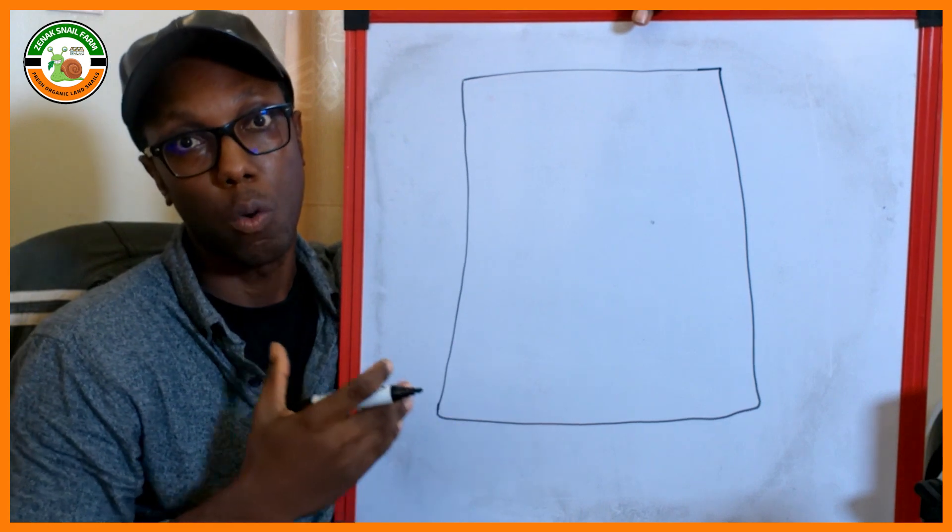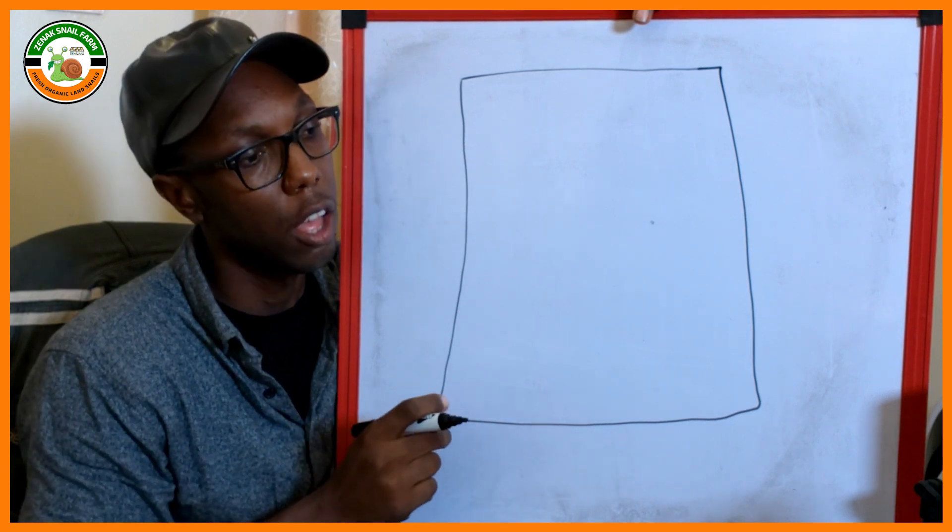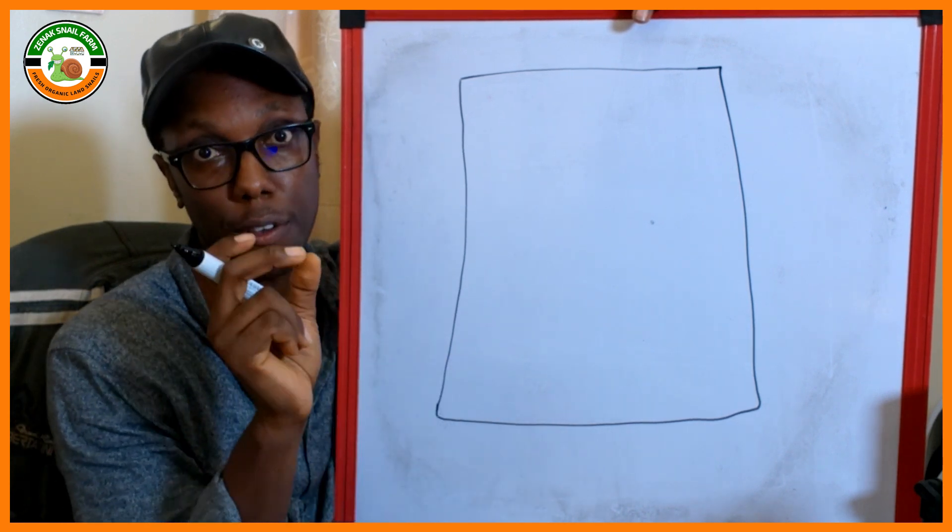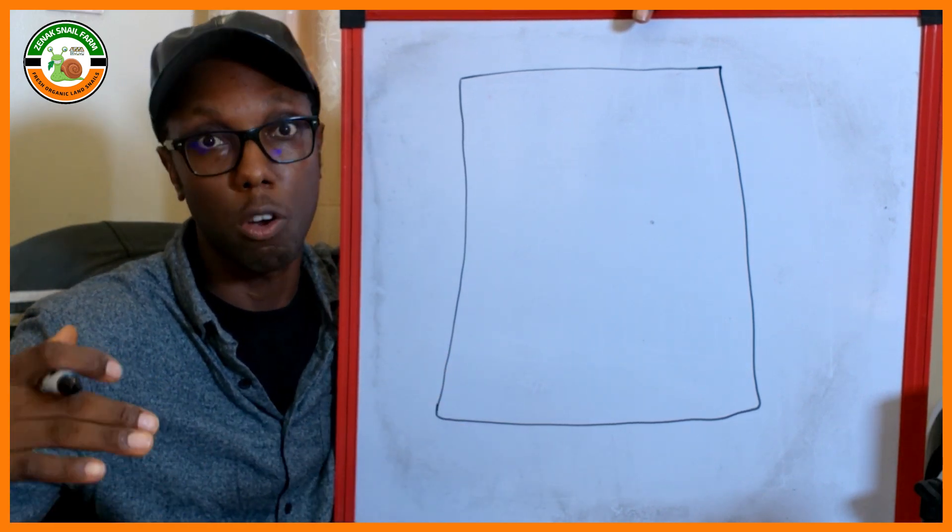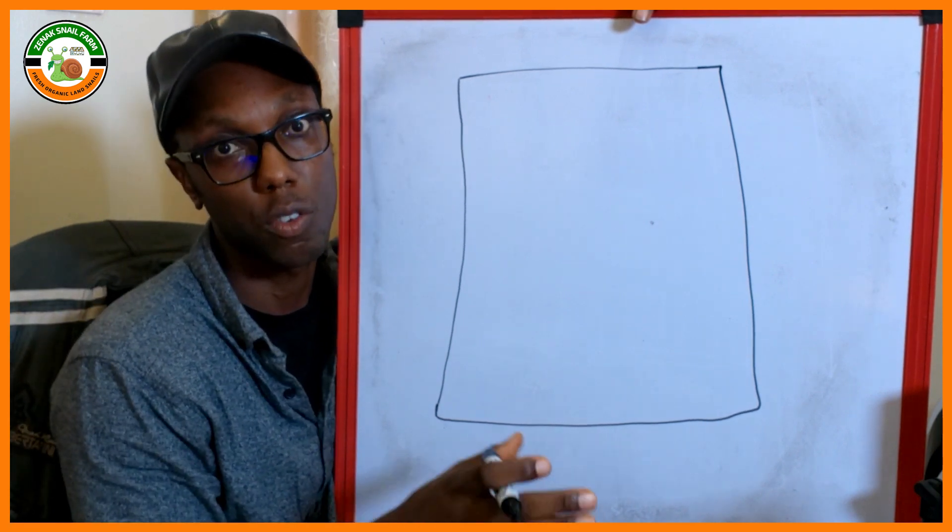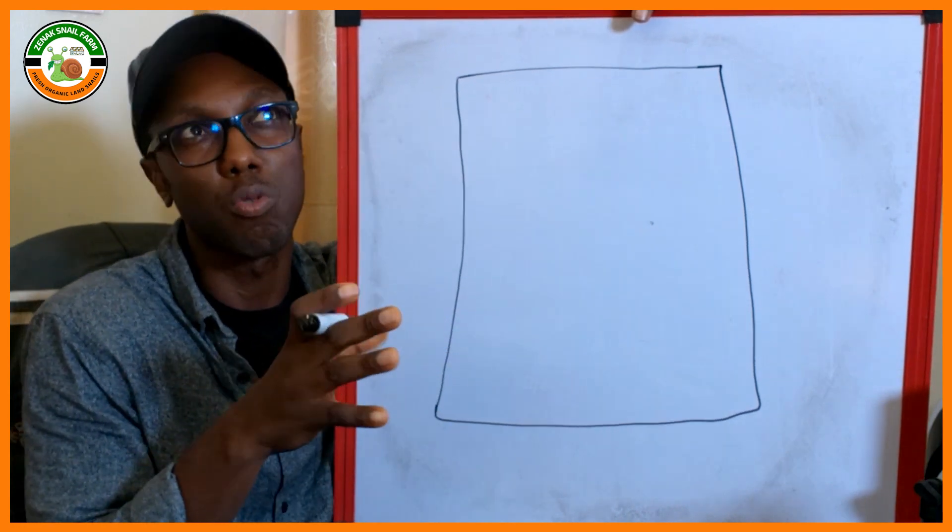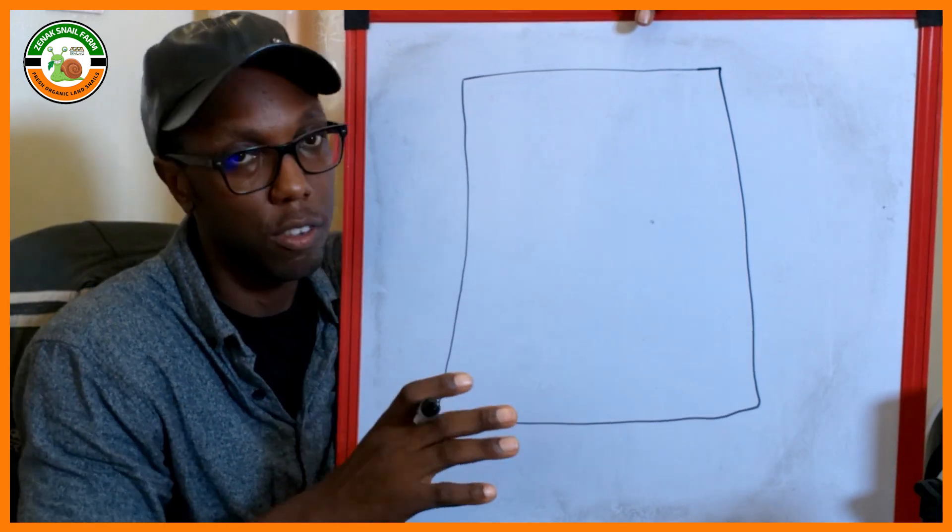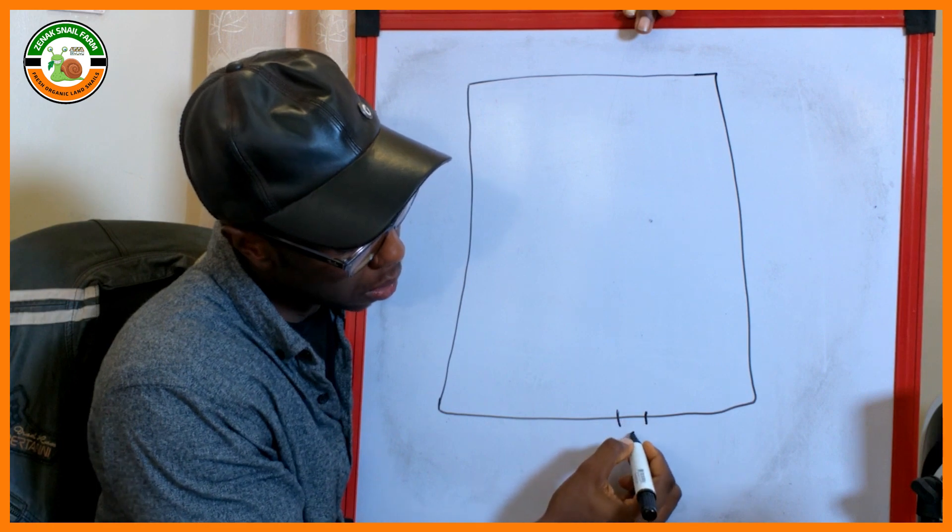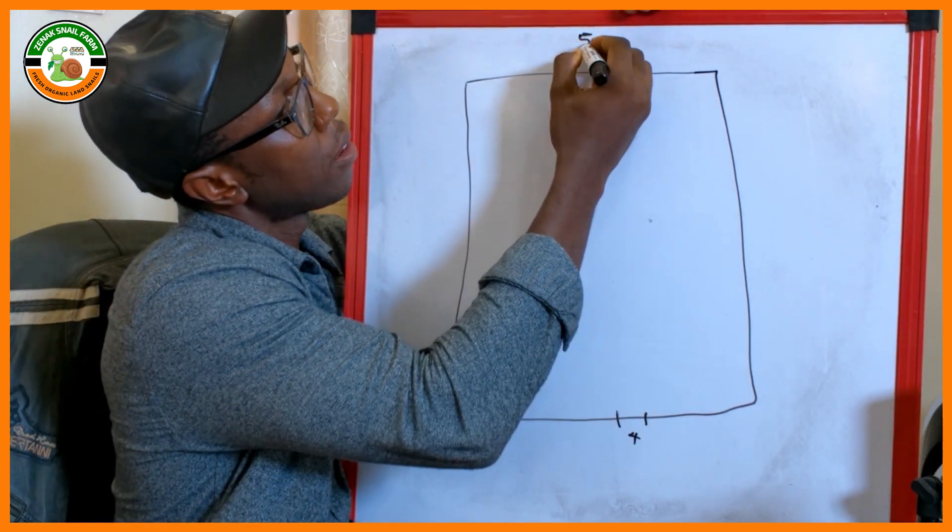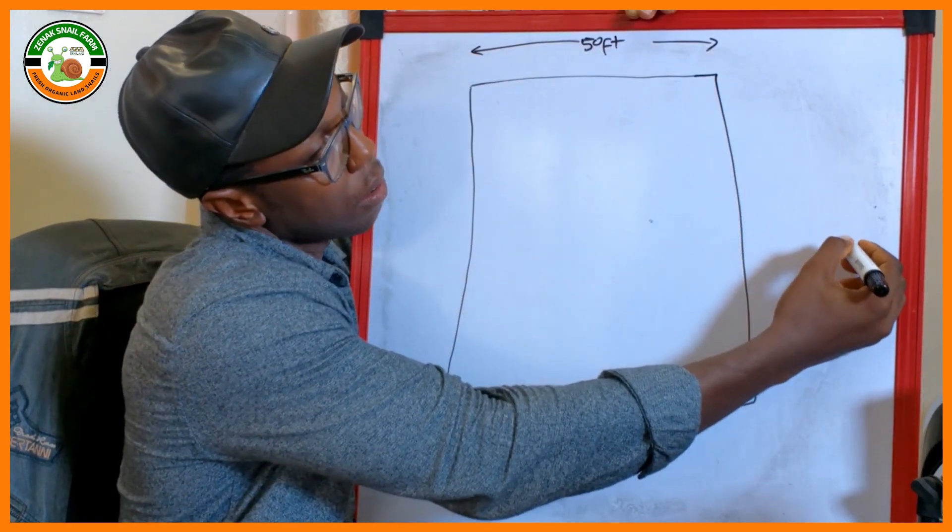The first decision I had to make was where to situate my door and how wide the door is. I went for a 4-foot wide door because I needed to be able to carry my wheelbarrow into my greenhouse. So I have my 4-foot door here. This is 50 feet, this is 100 feet.